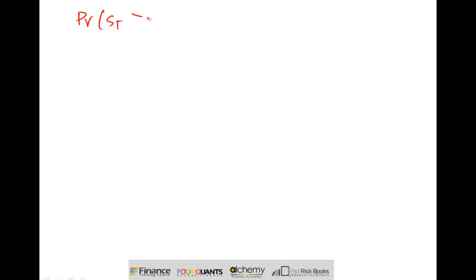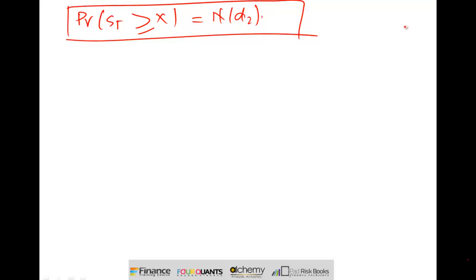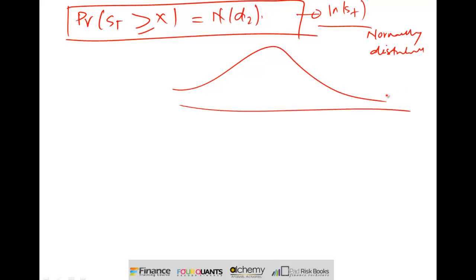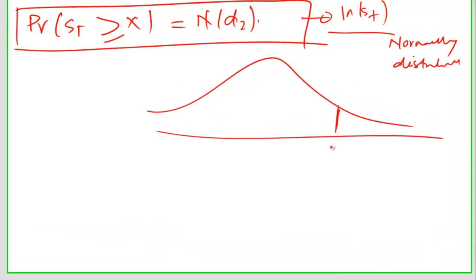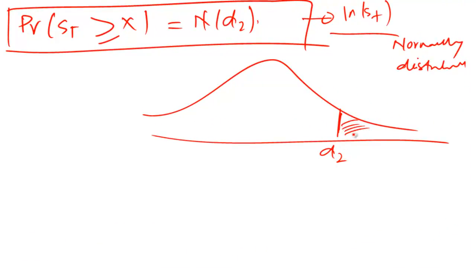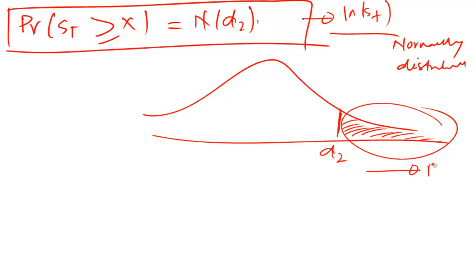Now that we've set the context, what we're really looking at is the probability that S(t) is greater than or equal to X, and we denote this probability by N of d2. How do we calculate N(d2)? We look at the distribution of ln(S(t)), which is normally distributed. For a normal distribution, d2 marks a point, and N(d2) denotes the part of the distribution that lies on the right-hand side of d2 — the probability that S(t) is greater than X.